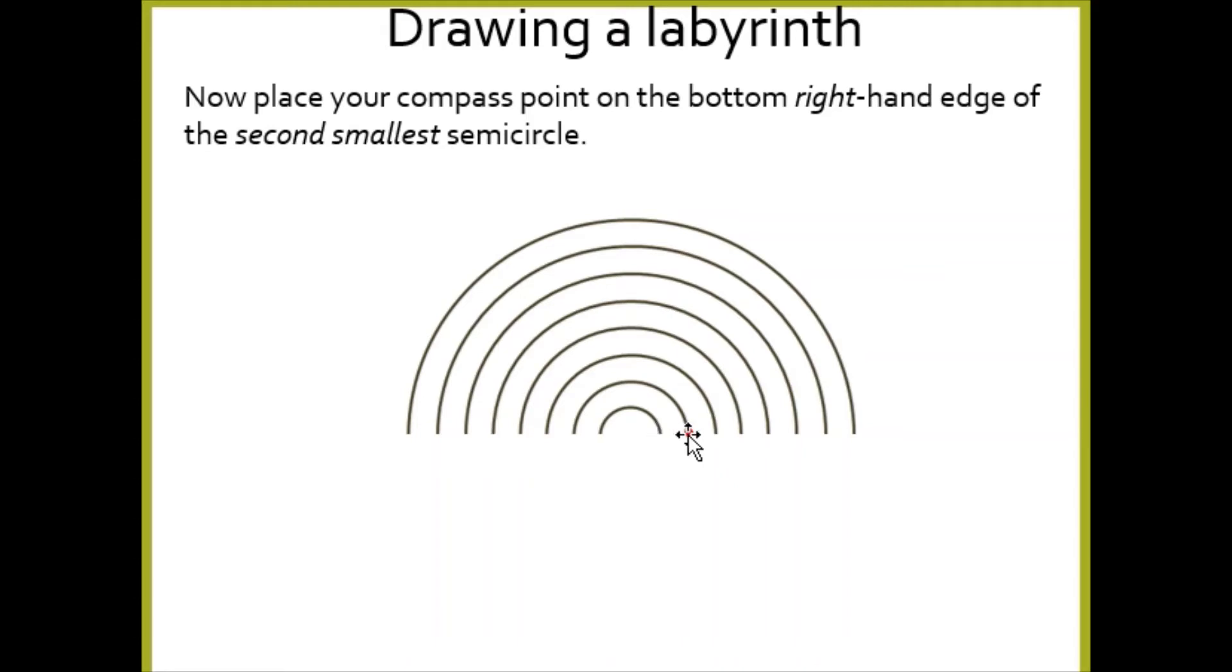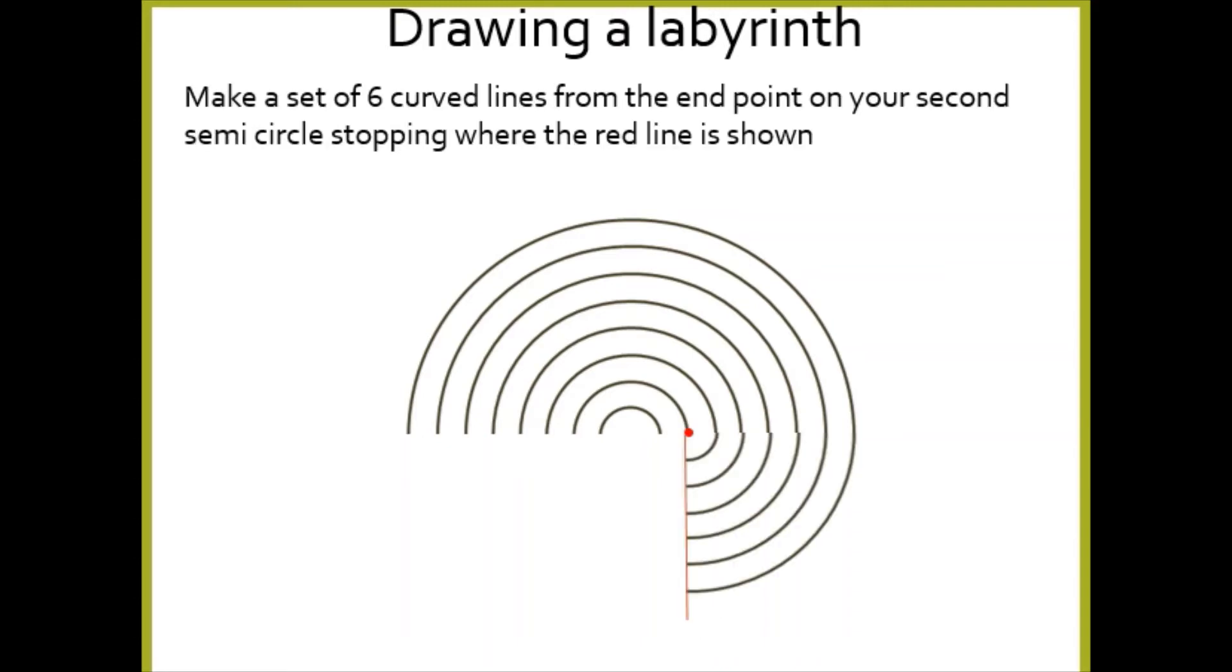From this dot you want to put your compass there and make a set of six curved lines from the end point, stopping where the red line is shown.